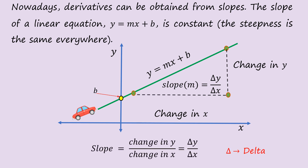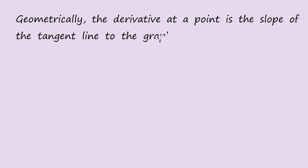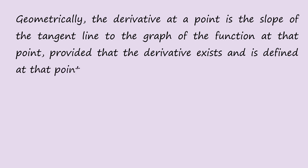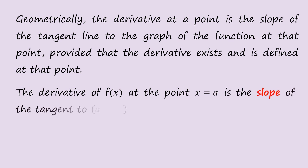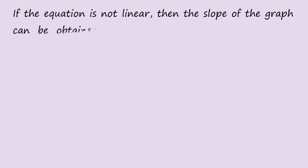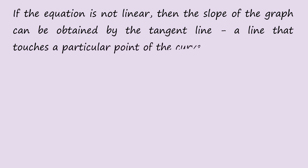We write the slope as delta y over delta x — this little triangle means delta. Geometrically, a derivative at a point is the slope of the tangent line to the graph of the function at that point, provided that the derivative exists and is defined at that point. The derivative of f(x) at the point x = a is the slope of the tangent to f(a). If the equation is not linear, then the slope of the graph can be obtained by the tangent line — a line that touches a particular point of the curve.